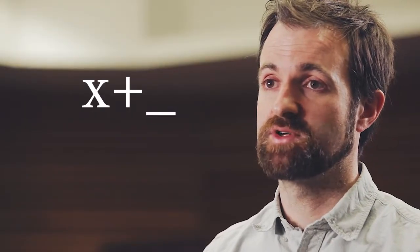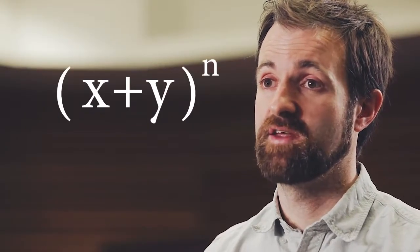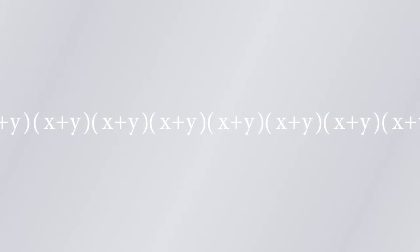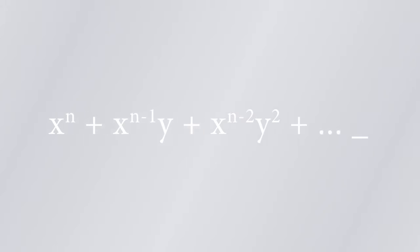This distribution has a really nice link to what's called the binomial expansion. If you take the expression x plus y to the power of n, where n is just some integer, some whole number, then you can expand that out. It's just multiplying x plus y by itself n different times. You can get expressions like x to the n, x to the n minus 1 times y, x to the n minus 2 times y squared, all the way down to y to the n.